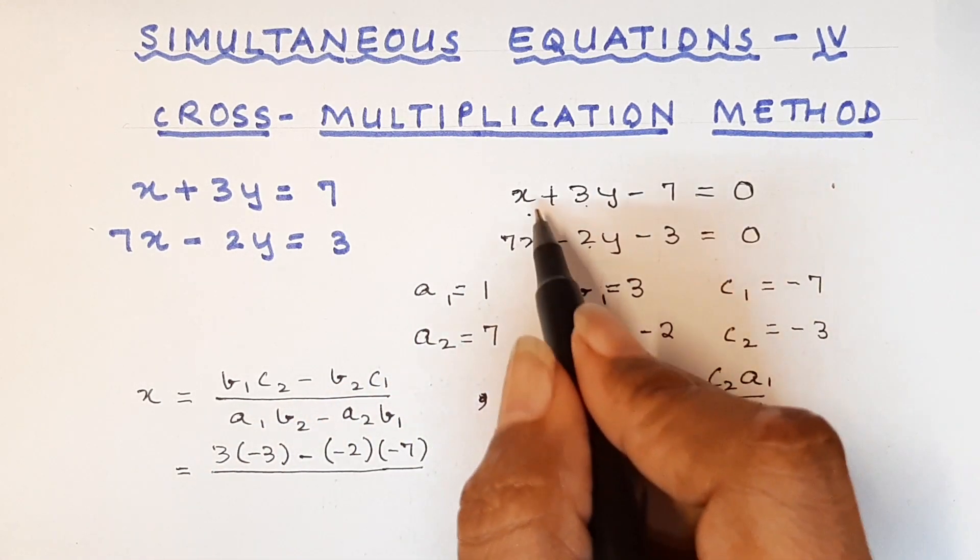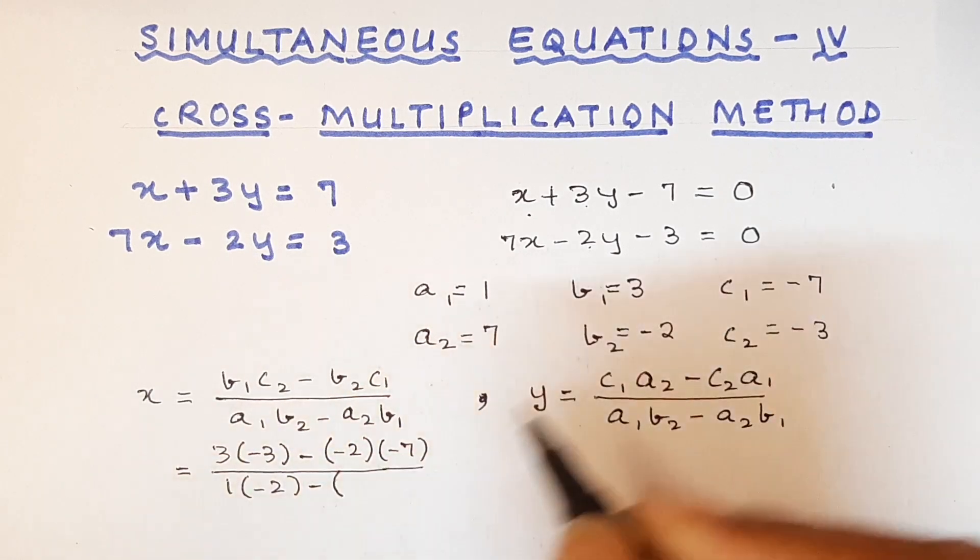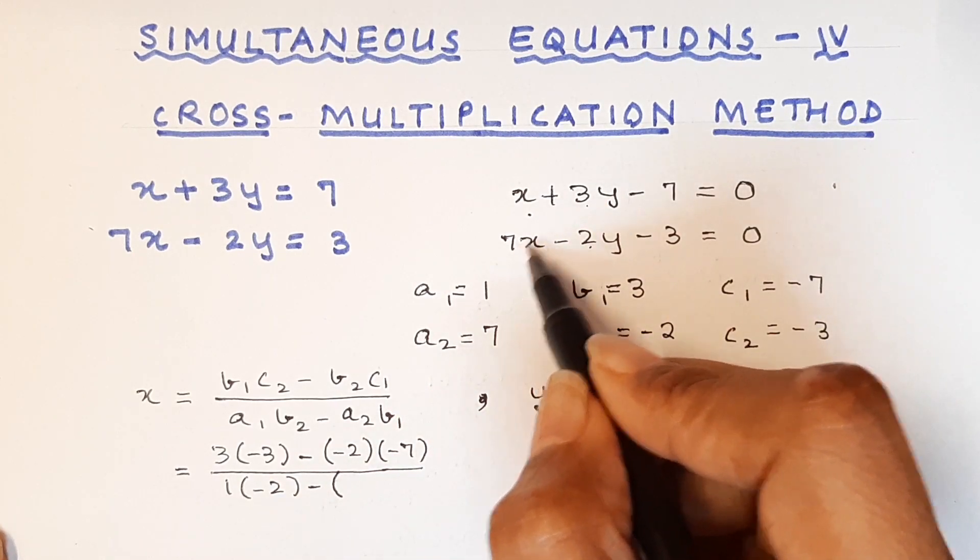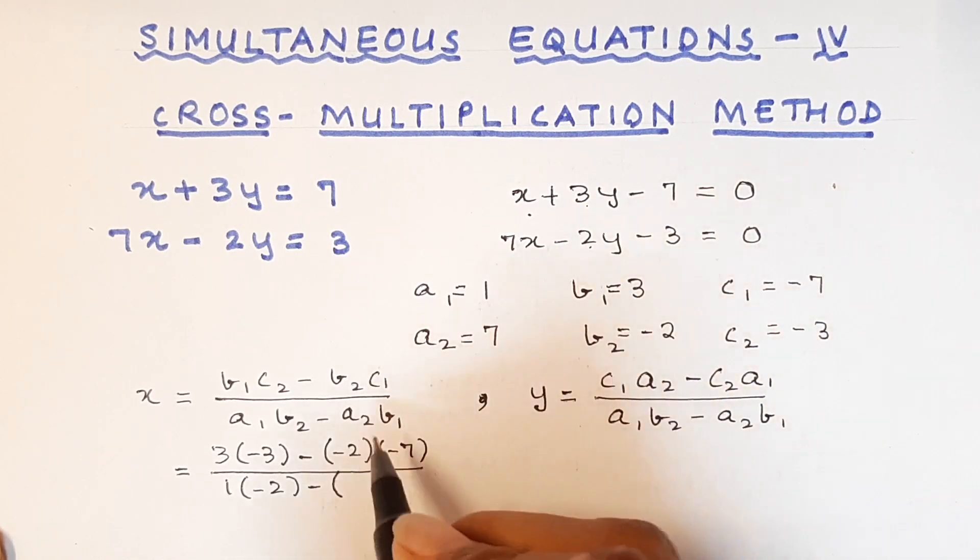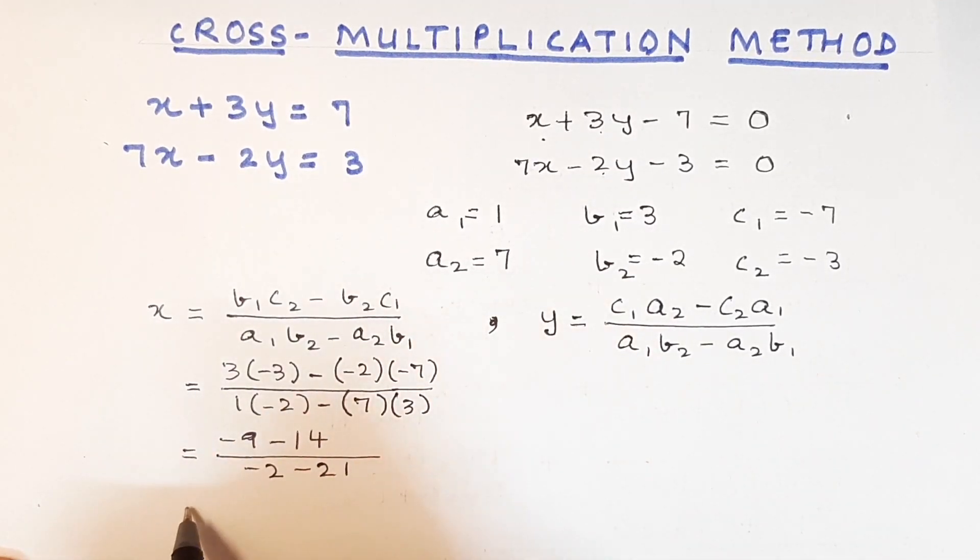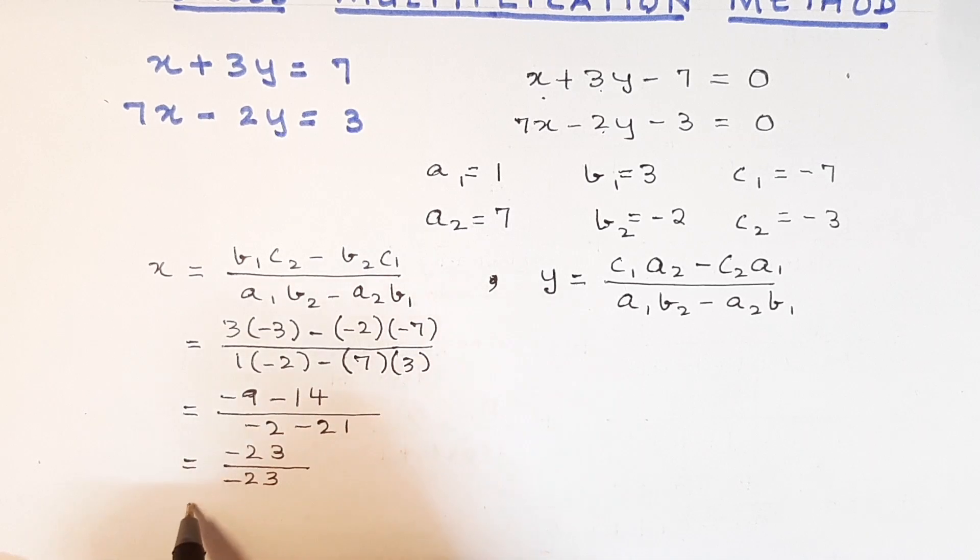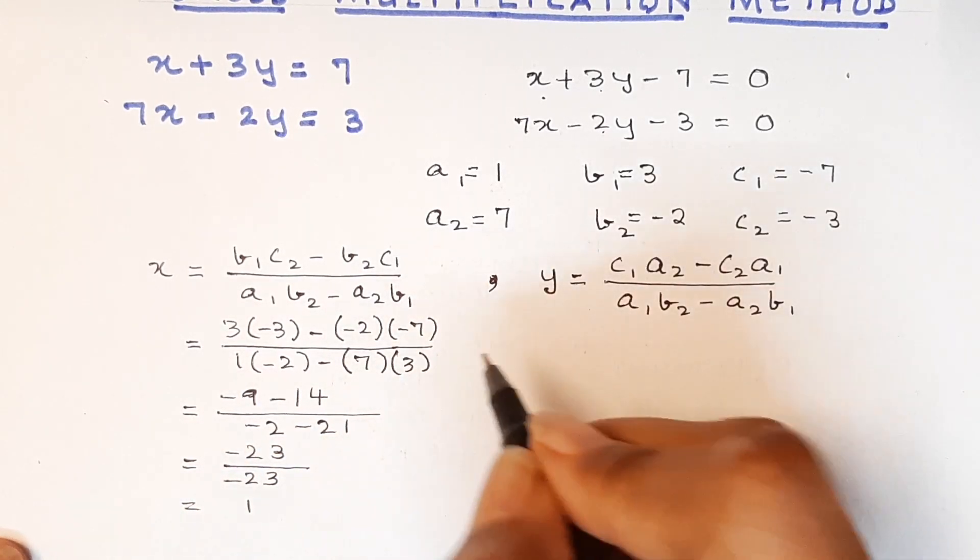Alright. Let us look at a and b. So a1b2. So it will be 1 into minus 2 minus it will be a2b1. So it will be a2b1 like so. That gives us minus 9 minus this is going to give us plus 14 into minus sign means it will be minus 14. Here it will be minus 2 and minus 21. And so we will have minus 23. Minus 9 minus 14 gives us minus 23, and that upon minus 23, and that is equal to 1. So we have the value of x as 1.